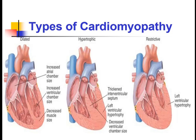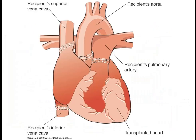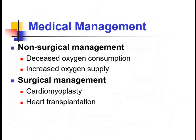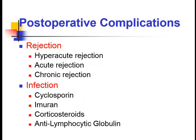In hypertrophic cardiomyopathy, the muscle size is increased while the chamber size is decreased. For non-surgical management, the approach includes decreasing oxygen consumption, increasing oxygen supply, and cardiomyoplasty or heart transplantation.